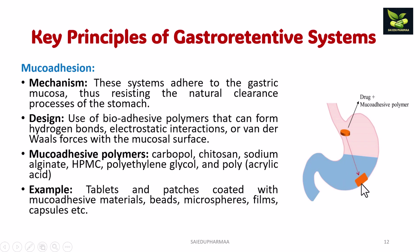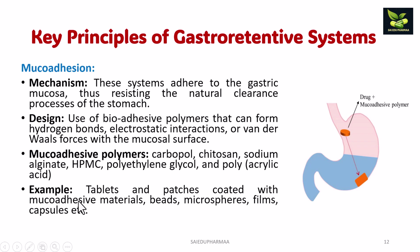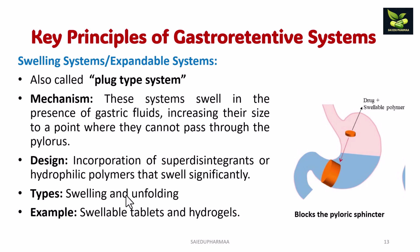Next comes mucoadhesion. These systems adhere to the gastric mucosa, thus resisting the natural clearance process of the stomach. Drug plus mucoadhesive polymer is used, and it sticks to the mucosa. Bioadhesive polymers are used in the design that can form hydrogen bonds, electrostatic interactions, or van der Waals forces with the mucosal surface. Examples of polymers used are carbopol, chitosan, sodium alginate, HPMC, polyethylene glycol, and polyacrylic acid. Examples of systems are tablets and patches coated with mucoadhesive materials, beads, microspheres, films, and capsules.